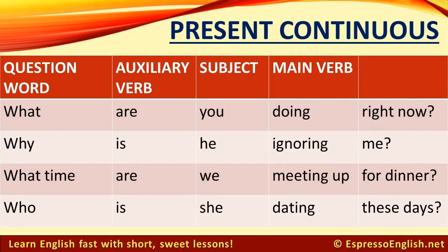To form questions in the present continuous, the auxiliary verb is 'is' or 'are,' and the main verb is in the -ing form. For example: What are you doing right now? Why is he ignoring me? What time are we meeting up for dinner? Who is she dating these days?